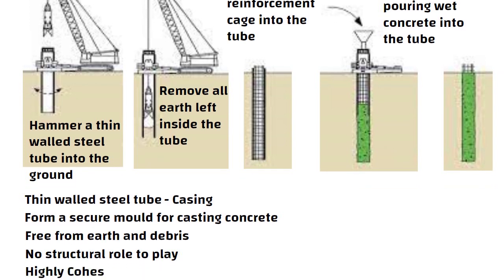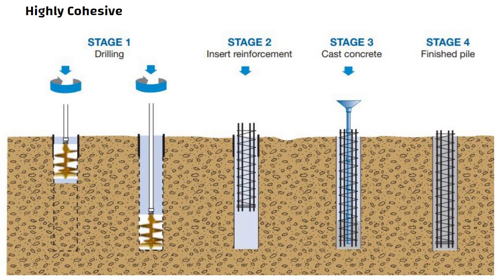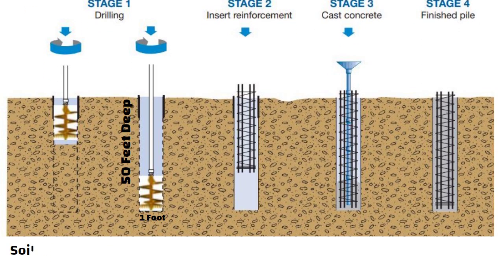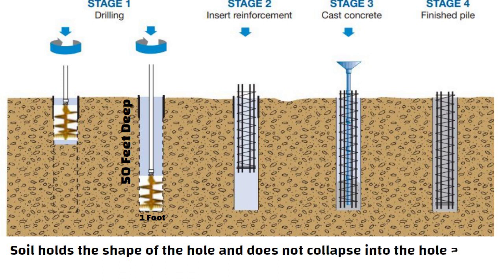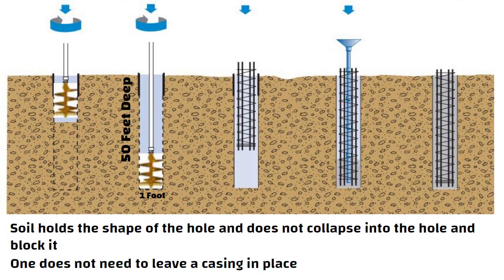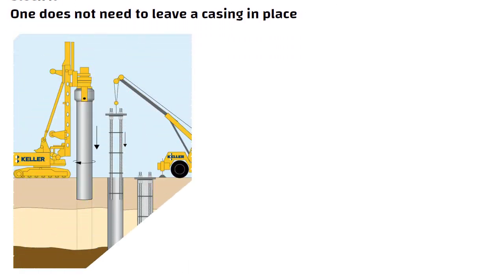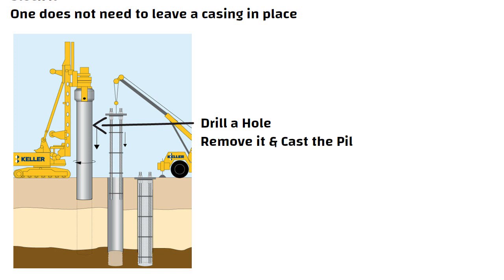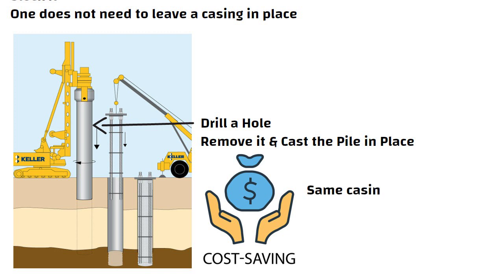Some soils are highly cohesive, meaning that if one drills a hole into the soil that is say 1 foot wide by 50 feet deep, then the soil holds the shape of the hole and does not collapse into the hole and block it. If such soil is present at the site, then one does not need to leave a casing in place. One can use the casing to drill the hole for the pile and then remove it and then cast the pile in place. This saves cost as the same casing tube can be used to drill holes for all the piles.